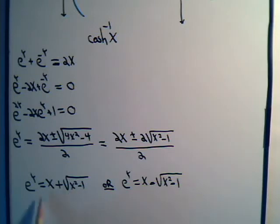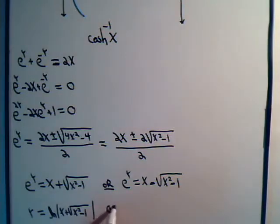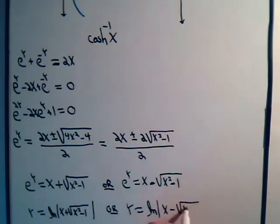Since x is always positive, this will always be positive, and that is always positive. So in this case, both solutions turn out to be valid. Now we can take our logarithms, and we'll have y equals the natural log of x plus the square root of x squared minus 1, or y equals the natural log of x minus the square root of x squared minus 1.